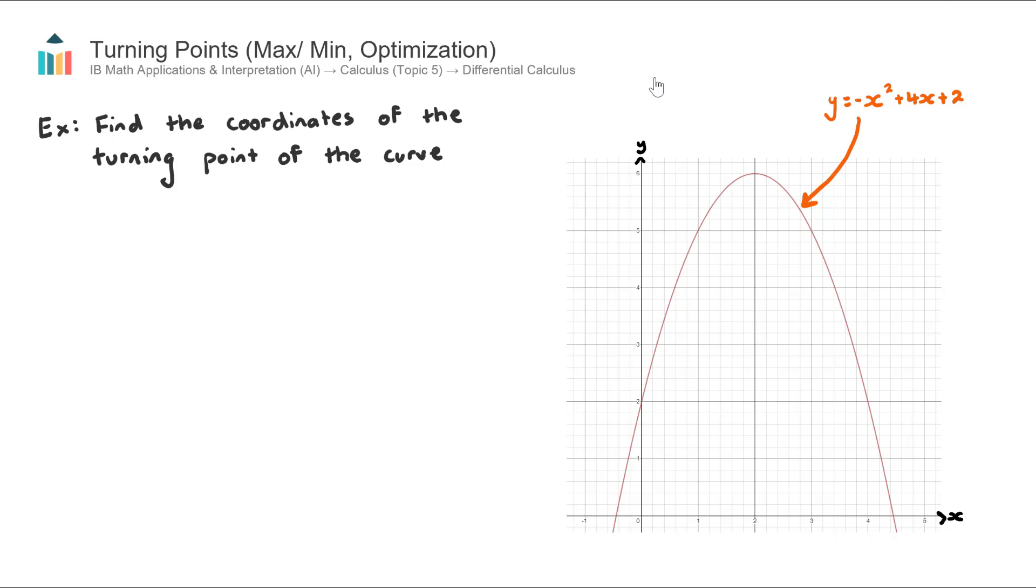Let's go ahead and read this question. We want to find the coordinates of the turning point of this curve here. Now you may be thinking well that's easy I can just read this straight off the axes, and that's a great observation, but sometimes it won't be that easy. Sometimes it might be decimals, sometimes you actually won't have the axes here. We do know in advance that our answer here is going to be (2,6) but we are going to find that answer using the derivative.